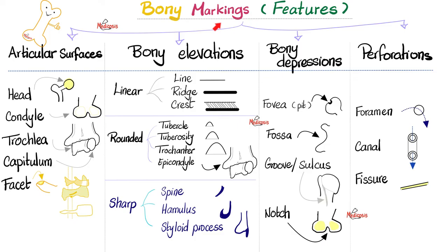Today's topic: bony markings, or bony features. We can divide them into four groups: articular surfaces, bony elevations, bony depressions — the opposite of elevations — and some perforations.